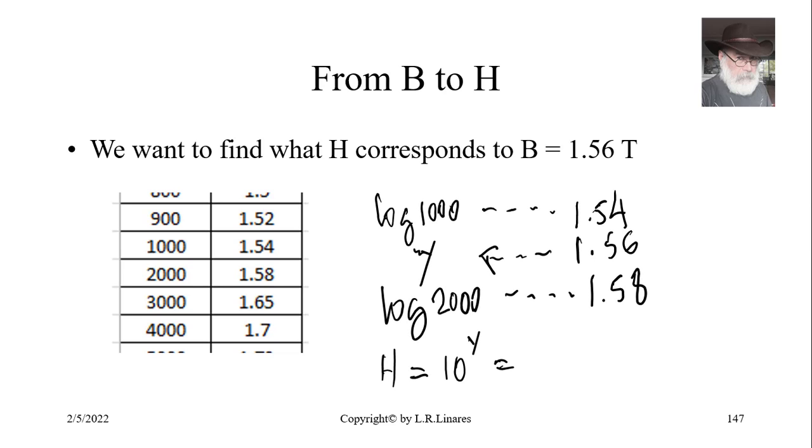So we need to take the logarithm of 1000, the logarithm of 2000. And then we can interpolate linearly to find Y in the middle that corresponds to 1.56. That Y will not be H. That Y will be the logarithm of H. We take the antilogarithm of that Y and we get that the value of H is 1400 amps per meter. Quite different from the 1500 that we thought it was.